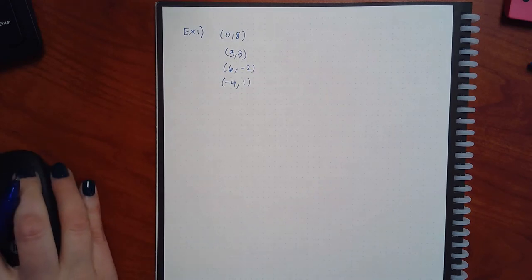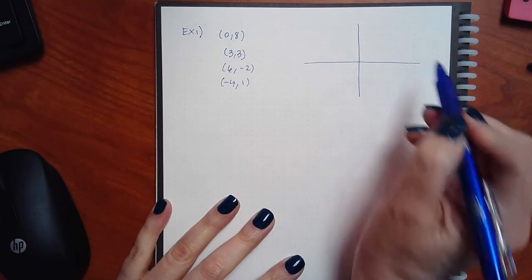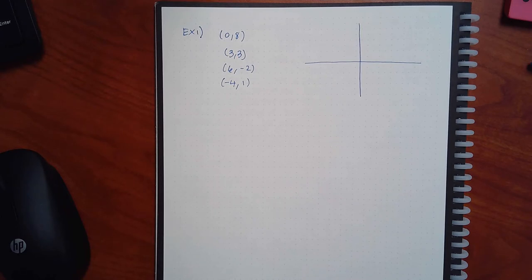Before we start I have to talk about the coordinate system — it's called a rectangular coordinate system. It has that name because eventually, maybe in college algebra but for sure in pre-calculus, there is a whole other coordinate system. The first one is the rectangular coordinate system and then later you'll talk about the polar coordinate system. One has squares, one has circles — that's the big difference.